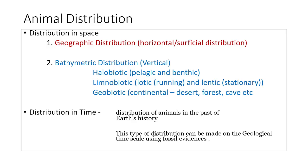Limnobiotic deals with the distribution of animals in fresh water. Fresh water can be seen in two forms: running water, which is lotic, and stationary water, which is lentic. The last type in bathymetric distribution is geobiotic, also called continental distribution, which covers distribution in terrestrial habitats such as deserts, forests, caves, and so on. That completes the discussion of distribution in space.